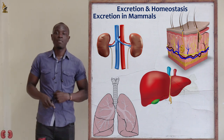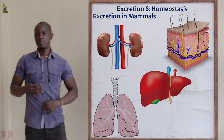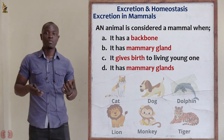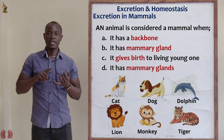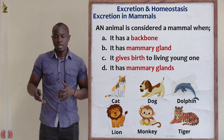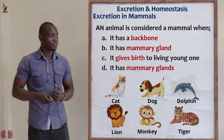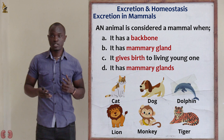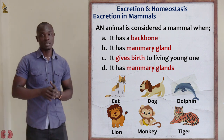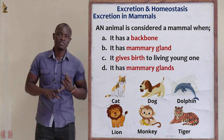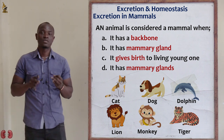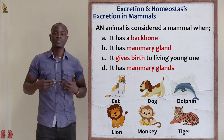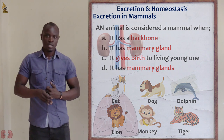Now let's begin with excretion in mammals. Mammals are called mammals because they give birth to living young and they have mammary glands. If an organism gives birth and has mammary glands, it is referred to as a mammal.